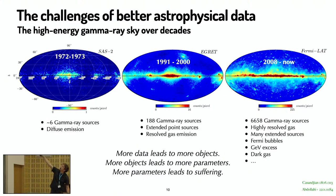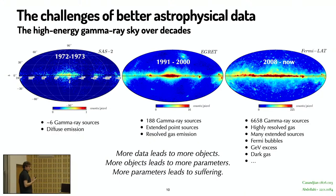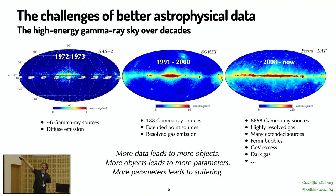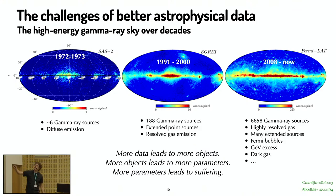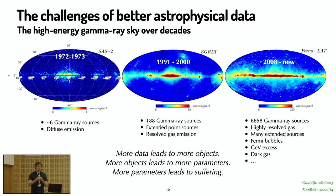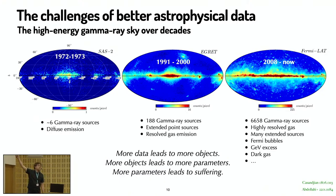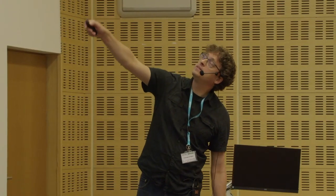That's a general trend in all kinds of astrophysical and cosmological observations: if you have more data, you simply see more objects, more of the universe. And if you have more objects, you need more parameters to parametrize their properties — where they are, what type of object they are. If you use traditional data analysis techniques, more parameters typically lead to suffering for the person who has to compare models with data. Nowadays, given that the data becomes better and better, we are often forced to make more and more compromises.